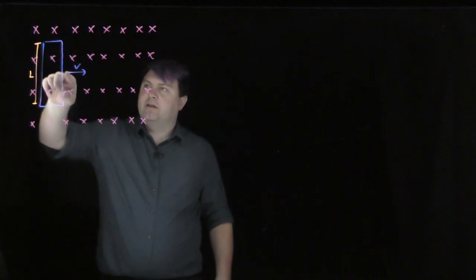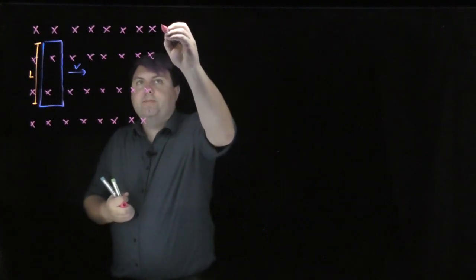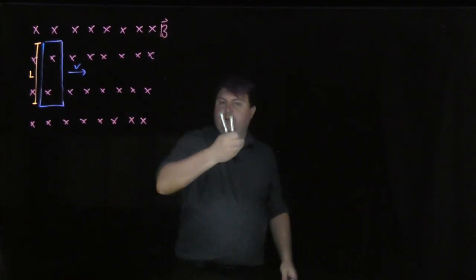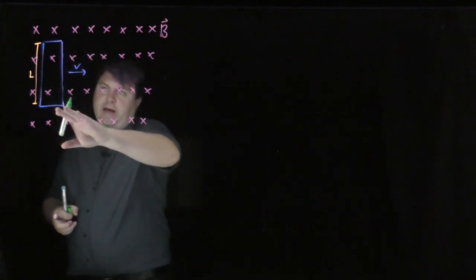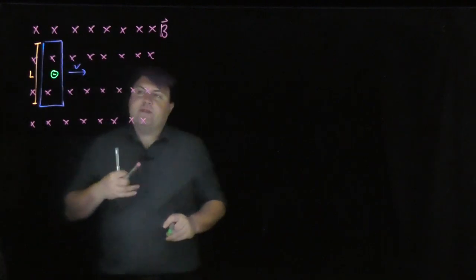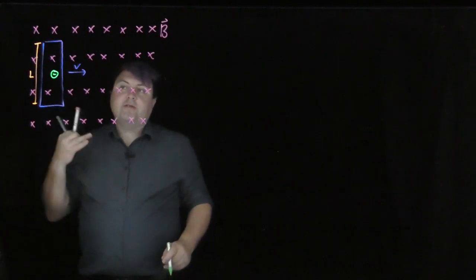We have here a conductor in a magnetic field pointing into the page, and that conductor is moving. If that conductor is moving, the conductor is made of constituent atoms. So we can have electrons. And if this is a metal, electrons are what we want to look at because the electrons are allowed to move in a metal.